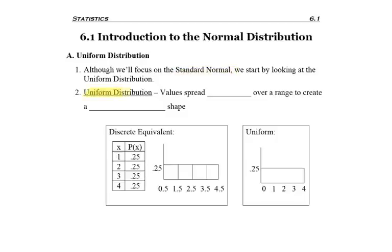So the definition of the uniform distribution is values that are spread evenly over a range to create a rectangular shape. And so that's what you'll see down below.